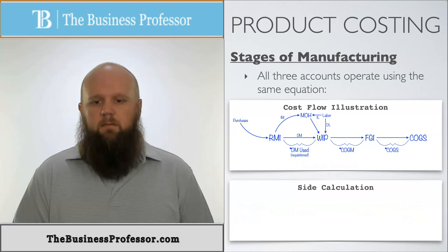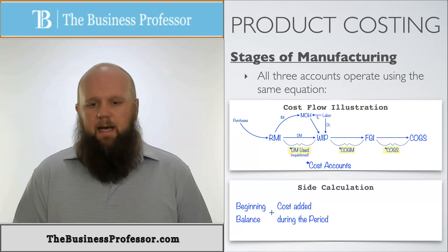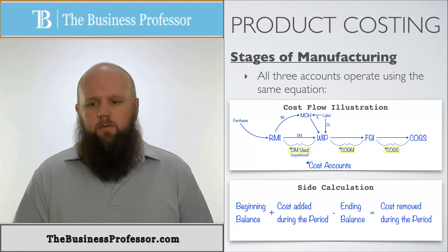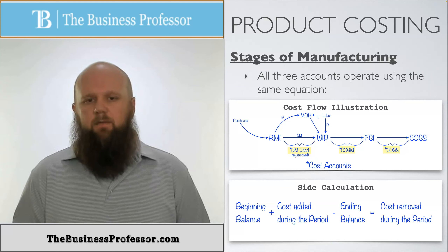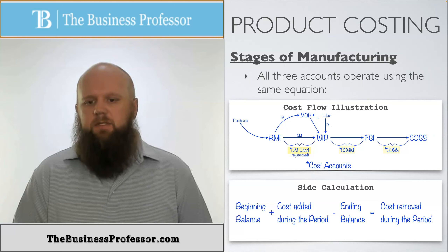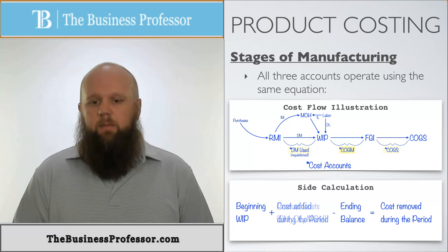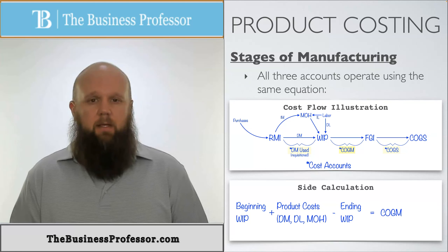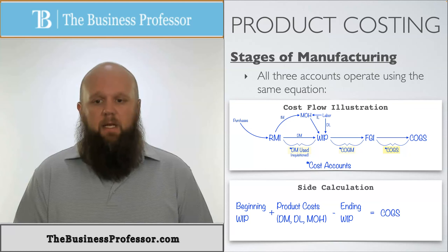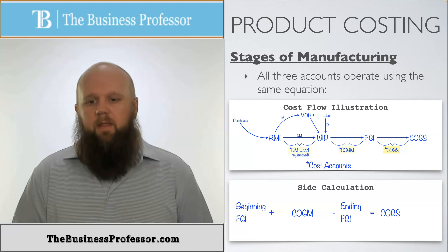Now let's look at the cost calculations — direct materials used, cost of goods manufactured, and cost of goods sold. The general equation is: beginning balance, plus cost added during the period, minus the ending balance, gives the cost removed. For cost of goods manufactured: beginning WIP, plus direct material, direct labor, and manufacturing overhead, minus ending WIP, gives cost of goods manufactured. For cost of goods sold: beginning finished goods inventory, plus cost of goods manufactured, minus ending finished goods inventory, gives cost of goods sold.